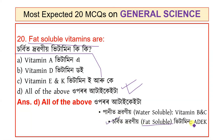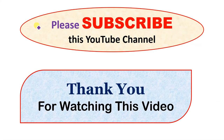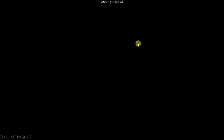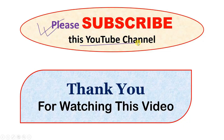Also remember: fat-soluble vitamins are A, D, E, K, and water-soluble vitamins are B and C. I will show you a trick for this in the next video. If you are interested in this channel, please subscribe, like, comment, and share. Thank you.